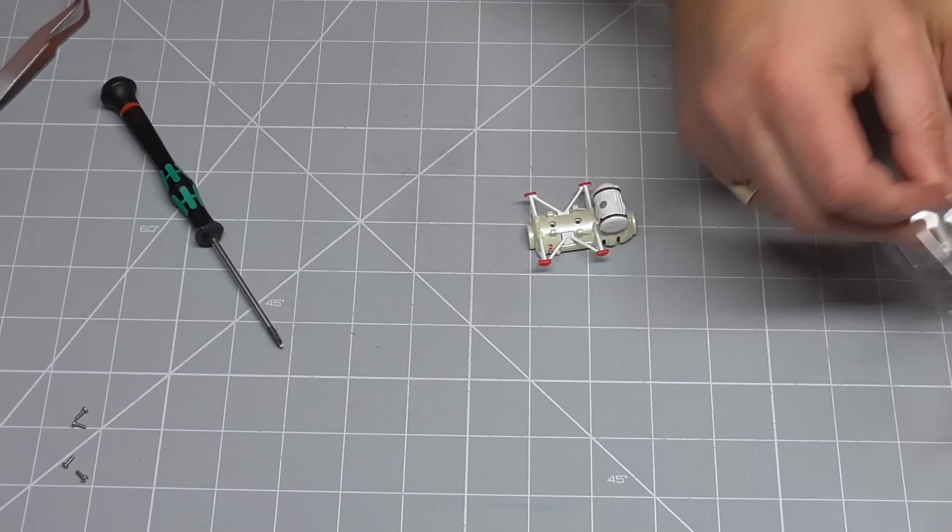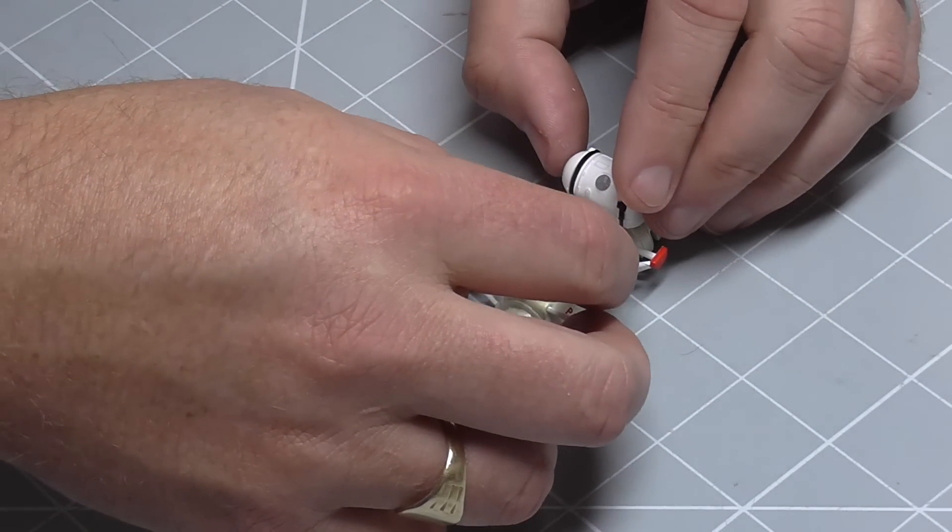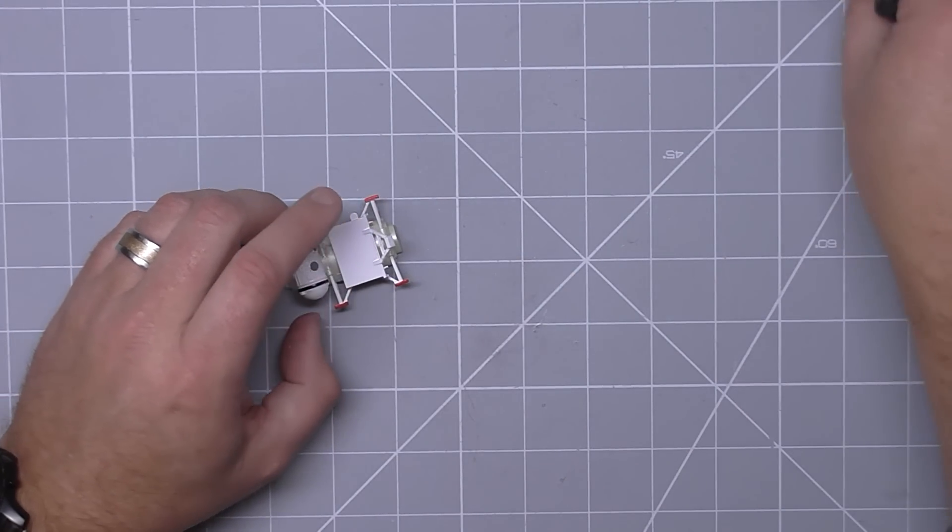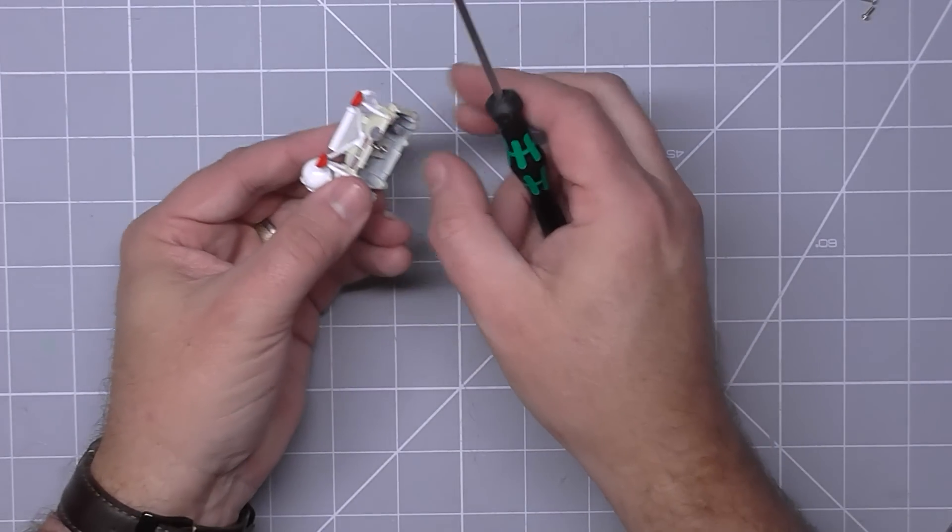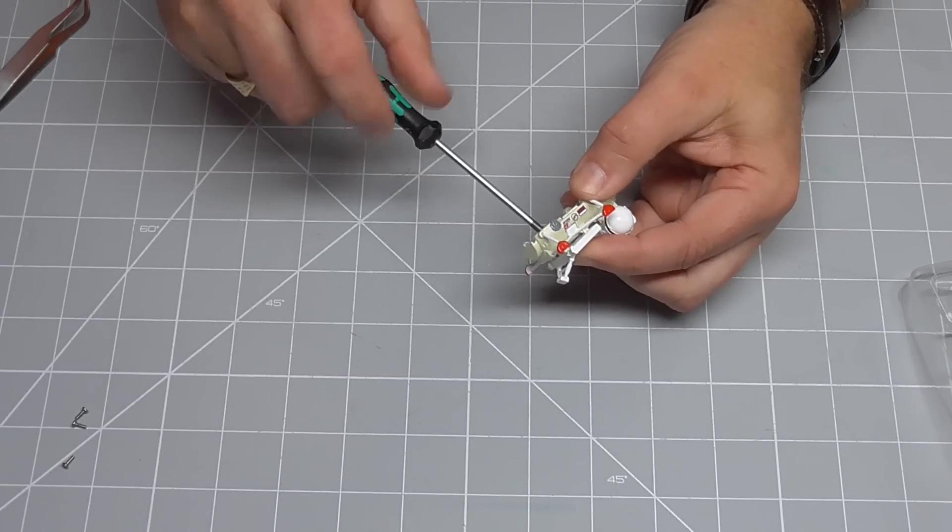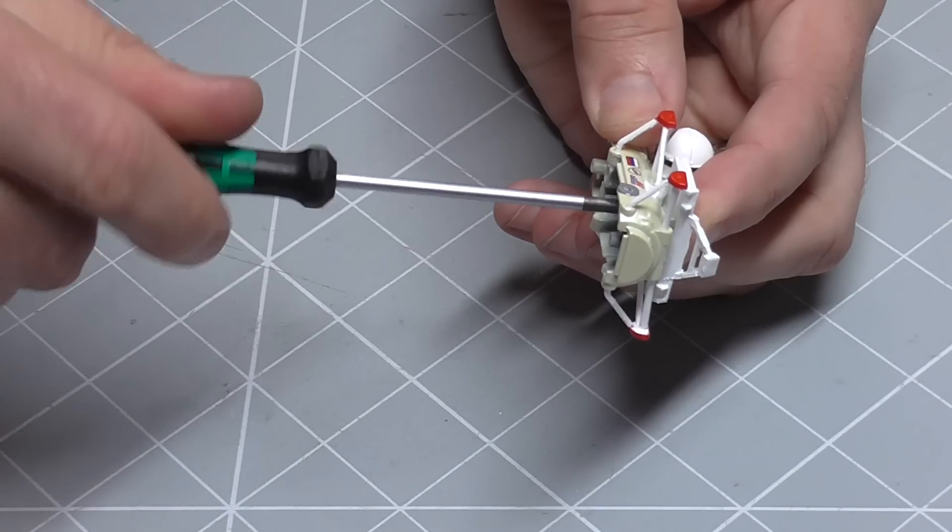The last thing to put in is just this cover plate here. Which is going into the two holes this way around. Like that. And again two of these silver screws into the holes here to hold that into place. So one there and one on this side.